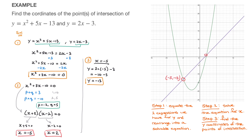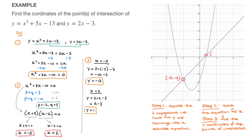Next, we find the y-coordinate for the point where x equals 2. Using the line equation: y equals 2 times 2 minus 3, which becomes 4 minus 3, so y equals 1. That's the y-coordinate of the second point of intersection. Looking at the graph, we can confirm this point has a y-coordinate of 1, giving coordinates 2, 1.